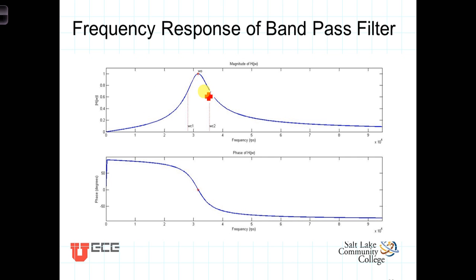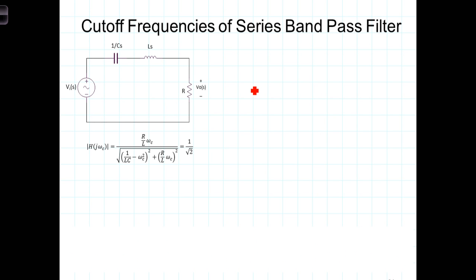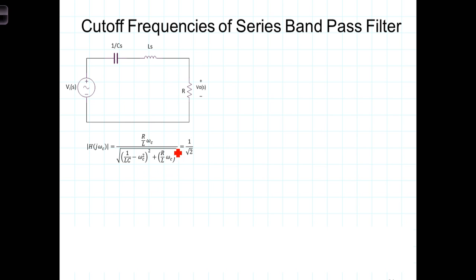As you can see, there are two frequencies that we're going to be looking for. To speed things along, I've written the expression for the magnitude of the frequency response that we derived in the last video, and I've replaced omega with omega sub c, meaning that we're now looking for the cutoff frequencies. At the cutoff frequency, the magnitude of the frequency response will equal 1 over the square root of 2 times H_max, but as we've mentioned, H_max is 1.